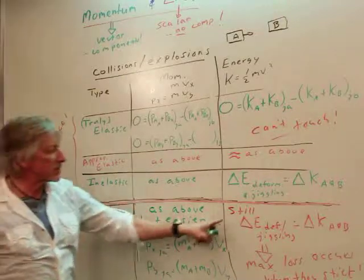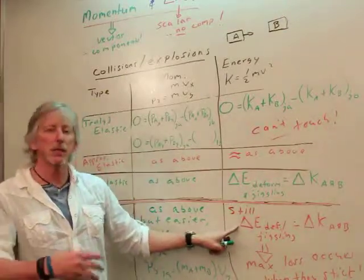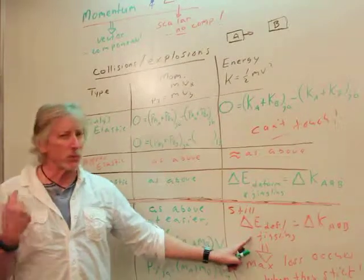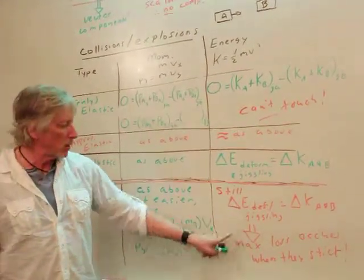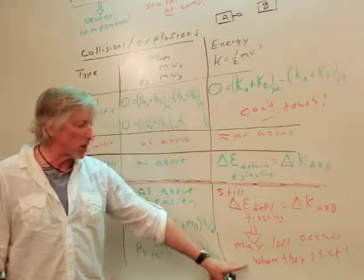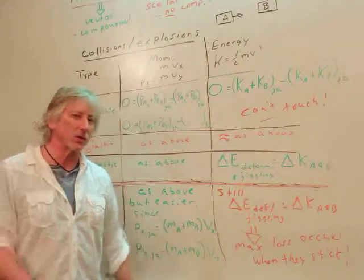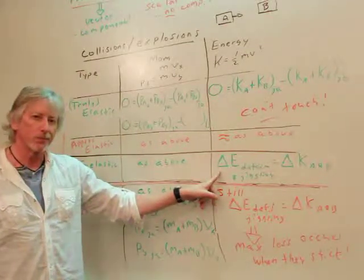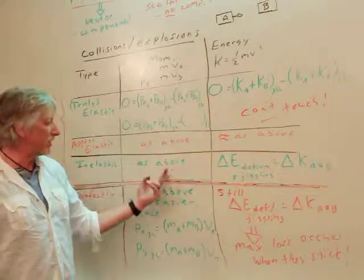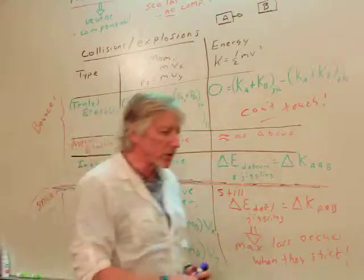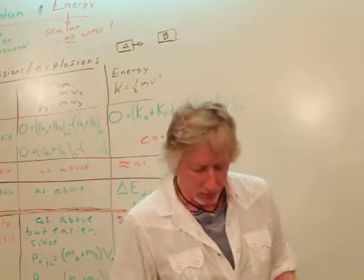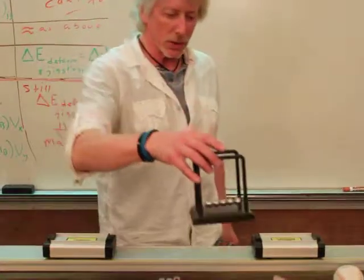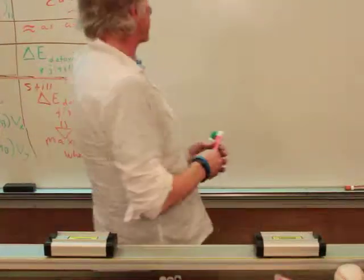Perfectly inelastic means they stick. Now, this is still true for perfectly inelastic. That is, the energy change is not zero. There's some deformation jiggling. The interesting thing is, you find that you get the maximum loss of energy when they stick. So that's a curious thing. And there's some other curious things, too. Like, why, when they hit, why is momentum conserved but kinetic energy isn't? Why is that? If there's jiggling, there's still no loss of momentum. Why is that? So let's explore that here.